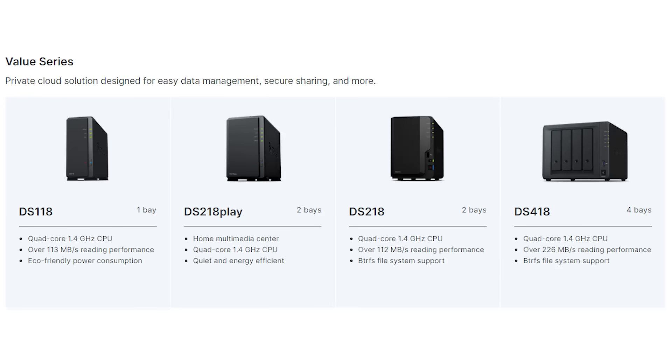If you want a bit more power, you can go up to the Value series. The big difference is you still have an ARM processor, but it adds hardware transcoding. That's important if you have files in different formats — H.264, H.265 — and you need to convert them because, for example, your smart TV only understands H.264 but the file is in H.265. It will do hardware transcoding on the fly, which means no interruptions when you're watching the video. And you get two gigabytes of RAM, which is great when you have lots of users connecting to your device.